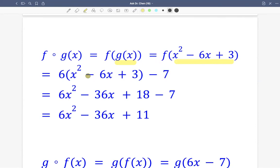How is f defined? f says multiply the input by 6, then minus 7. So this is the input, multiply by 6, then we subtract 7. We simplify and get another quadratic function.